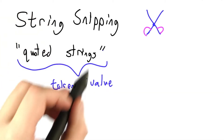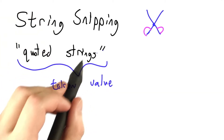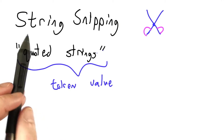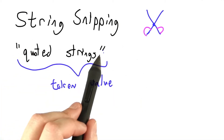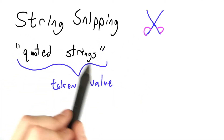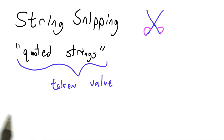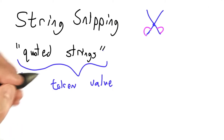This is our default token value, but we might want to take a small pair of scissors to this string and snip off the quotes at the beginning and at the end.